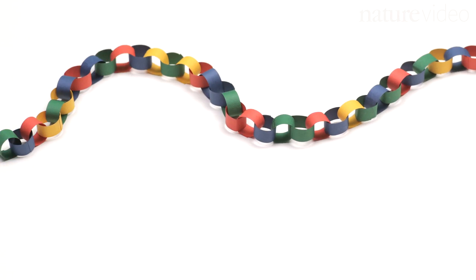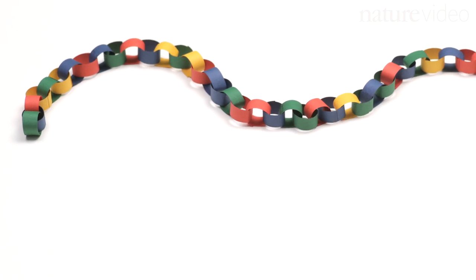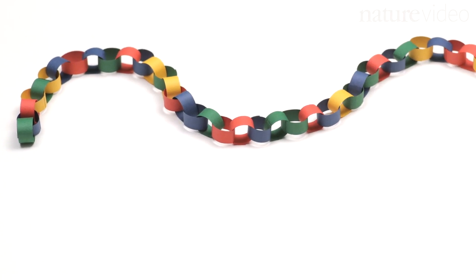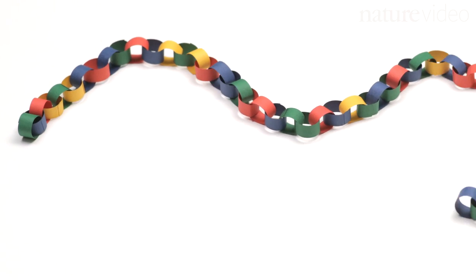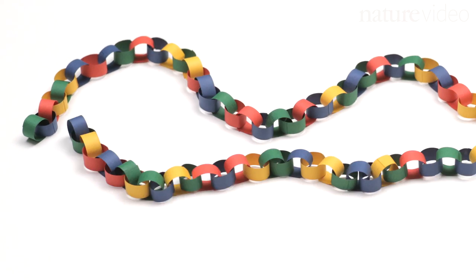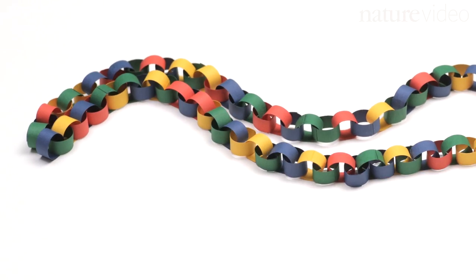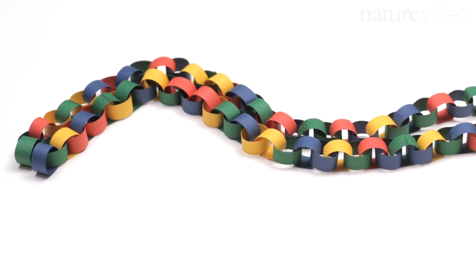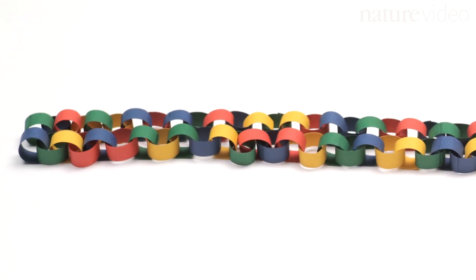DNA is made of four chemical bases shown here by the four colors. The bases always pair up in the same way: green always with blue, red always with yellow, till the two strands line up to form a double helix.